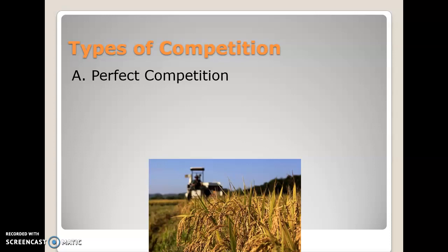Perfect competition exists when there are many producers selling an identical product, no single firm controls the price, and businesses find it relatively easy to enter and exit the market. Number one: there are a high number of firms, each with a very small share of the total market. A good example is a soybean farmer — even one owning a 100,000-acre farm producing over 3.5 million bushels annually would still be producing less than one-fifth of one percent of total U.S. soybean production.